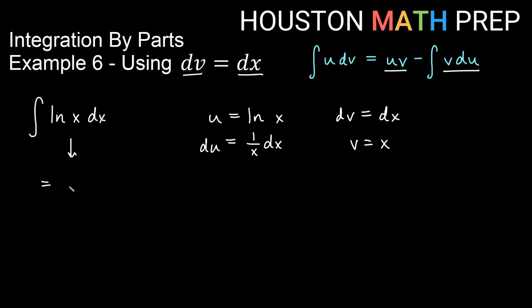uv is going to be x times ln of x minus the integral of vdu. Here I have an x and I have a 1 over x and if I multiply those together, I will just get 1. So 1 dx or just dx.